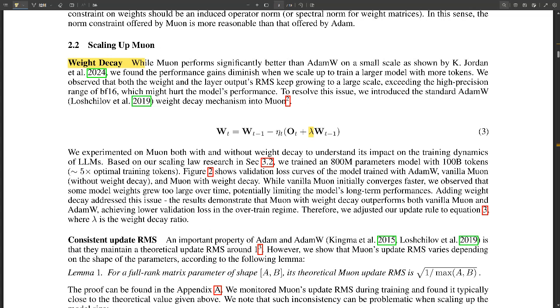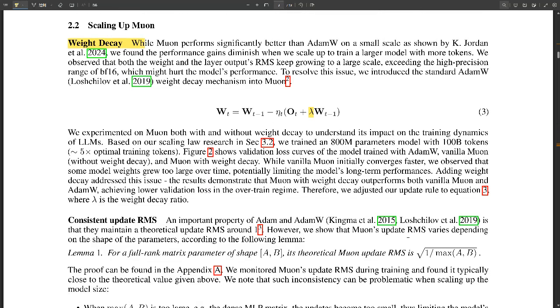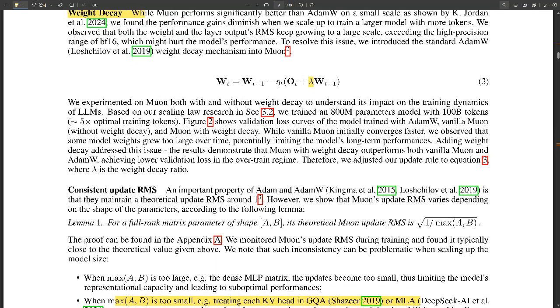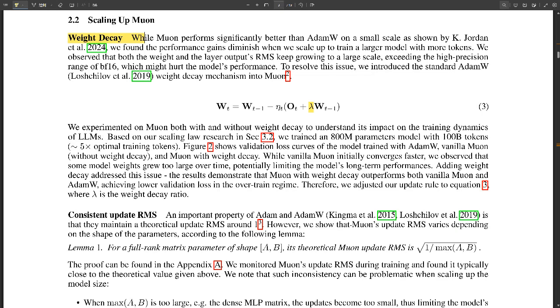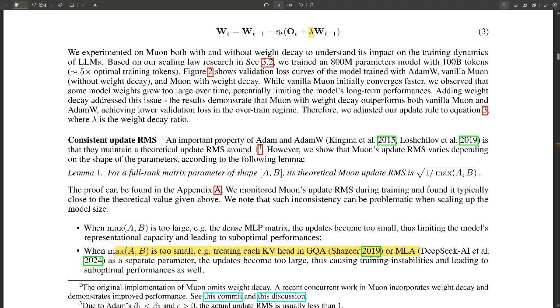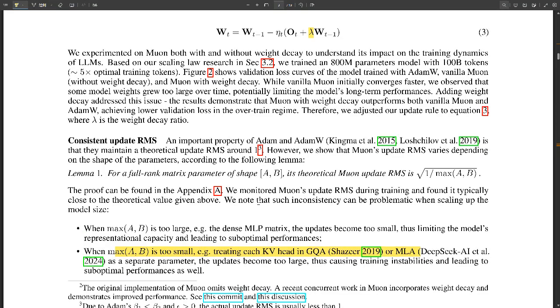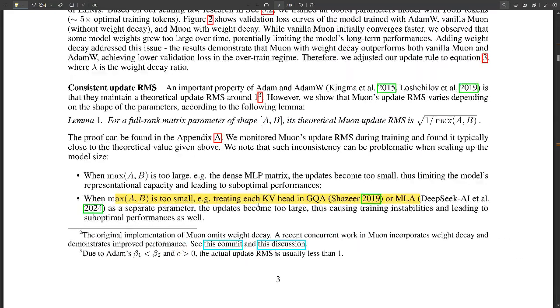So the researchers came up with a really clever way to harmonize these updates and ensure that everything was working together smoothly. So they basically tuned the orchestra and made sure that everyone was playing in harmony, and that led to a much better performance overall. I like that analogy. It sounds like they've really optimized Muon for those really big models. But how did they actually put it to the test? Well, they used it to train a model called Moonlight, and that's where things get really interesting.